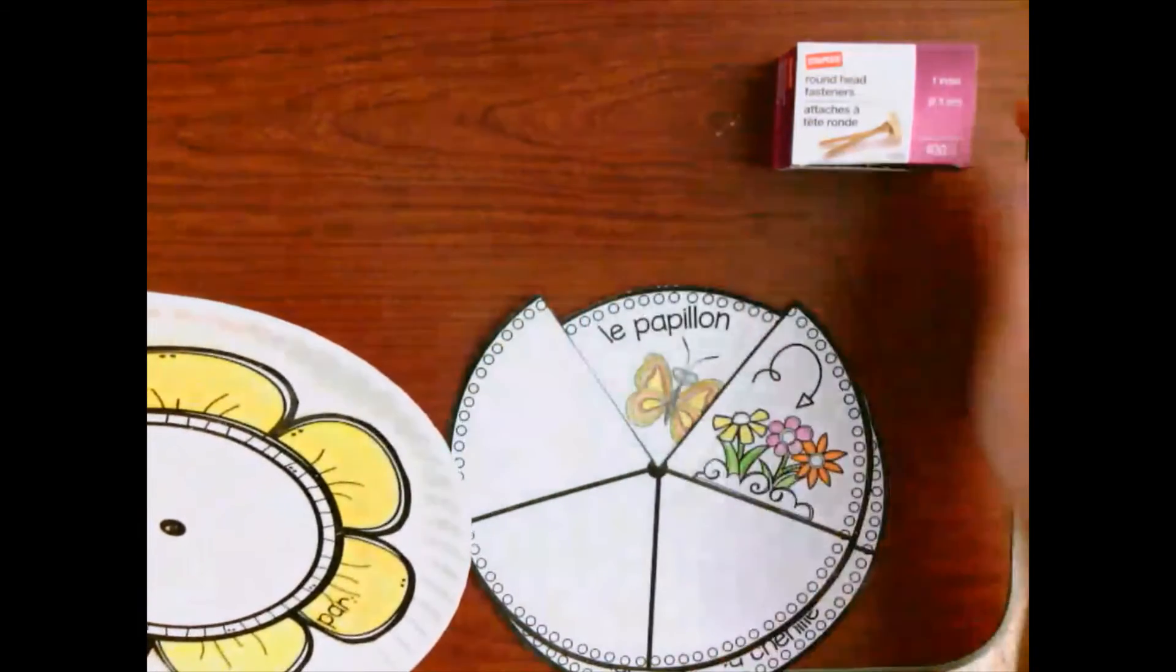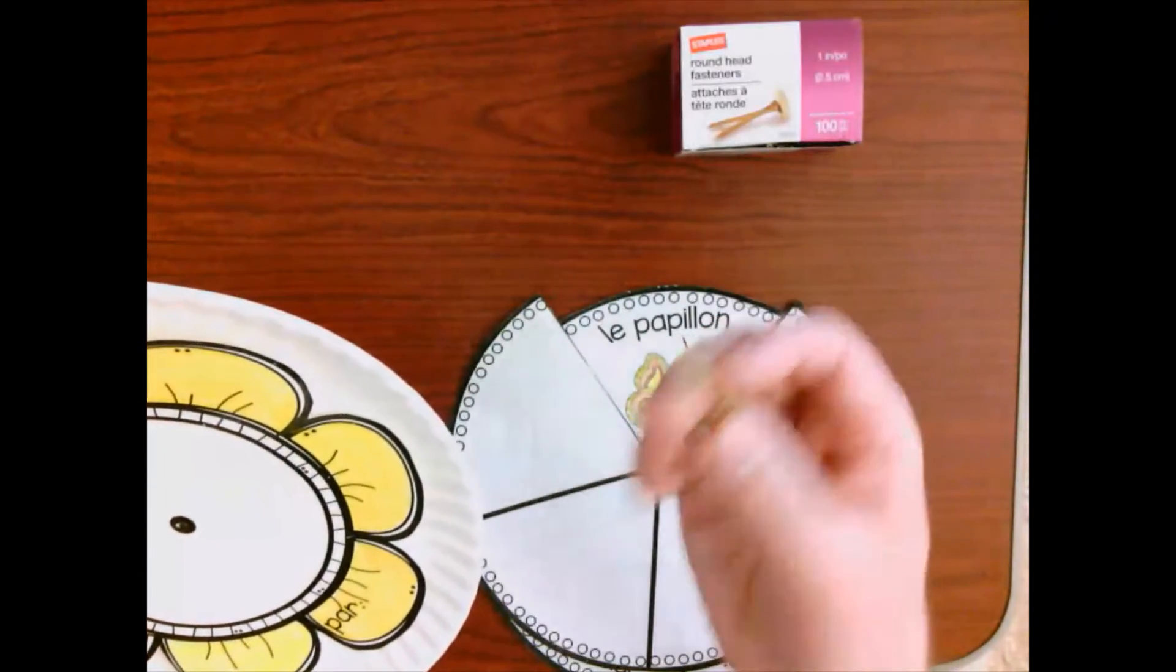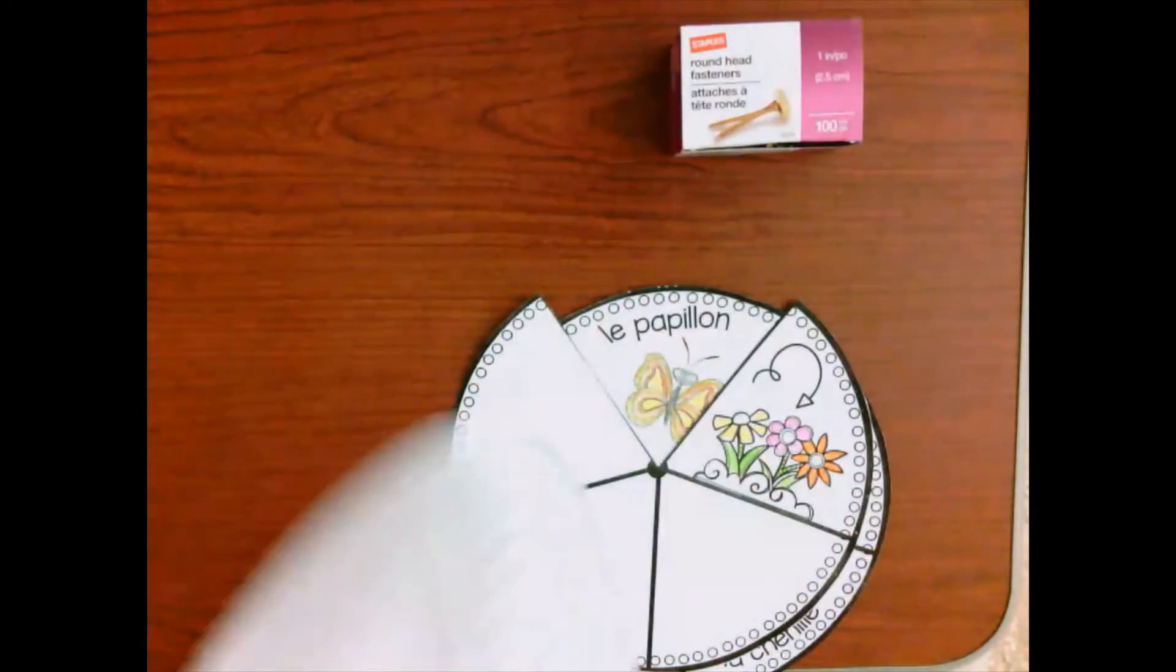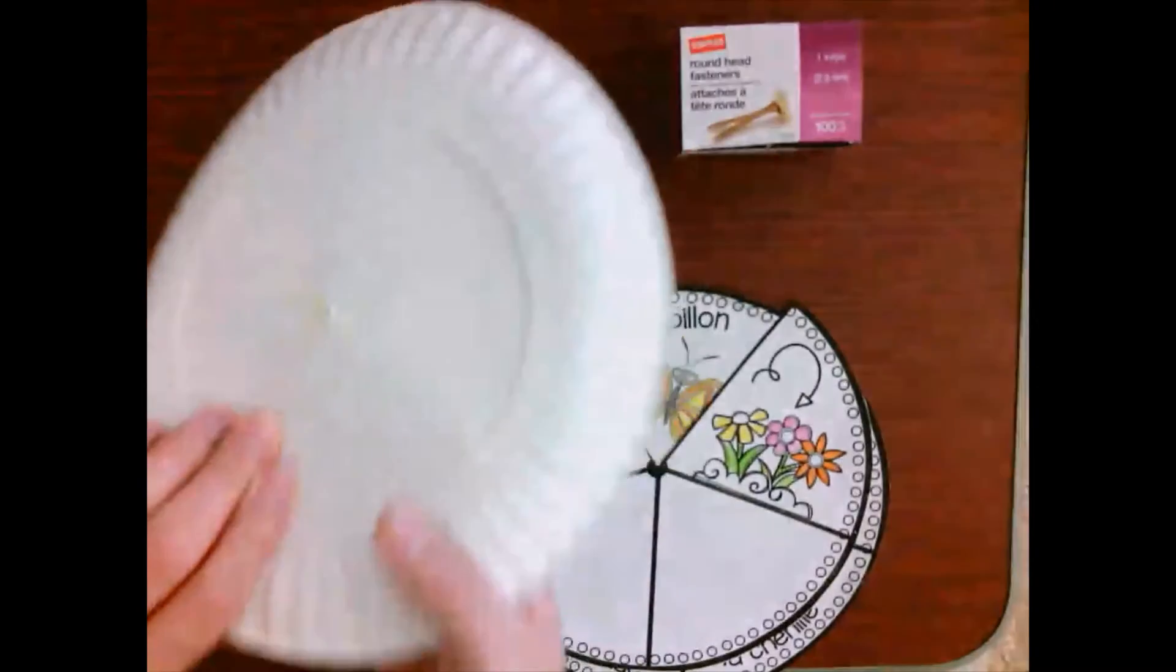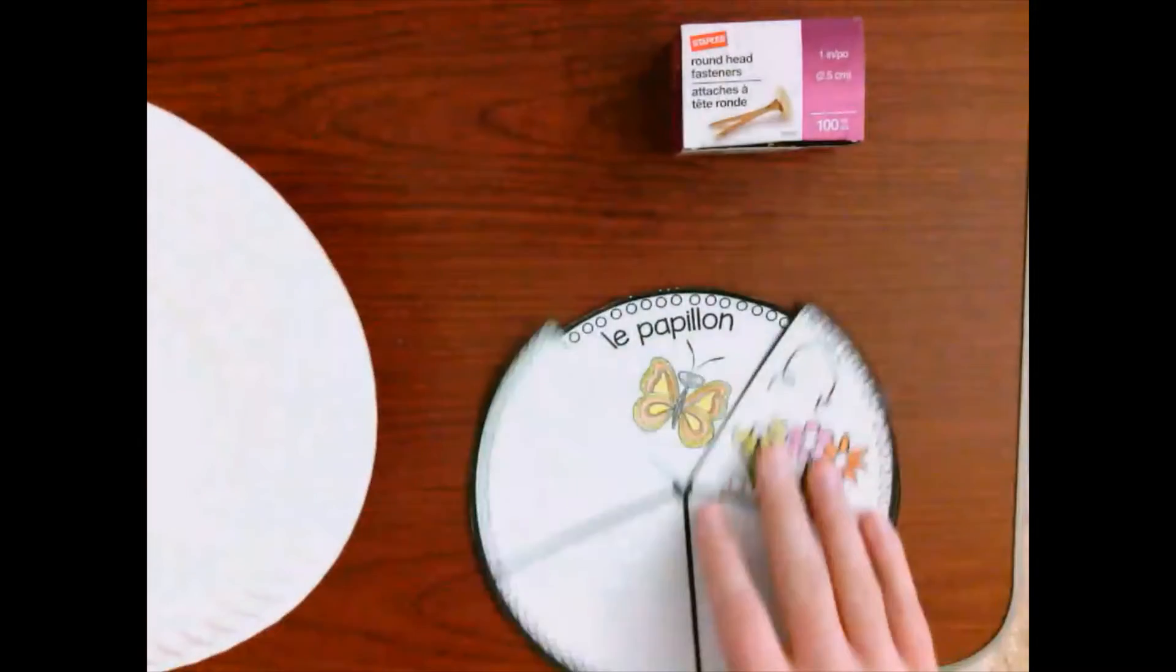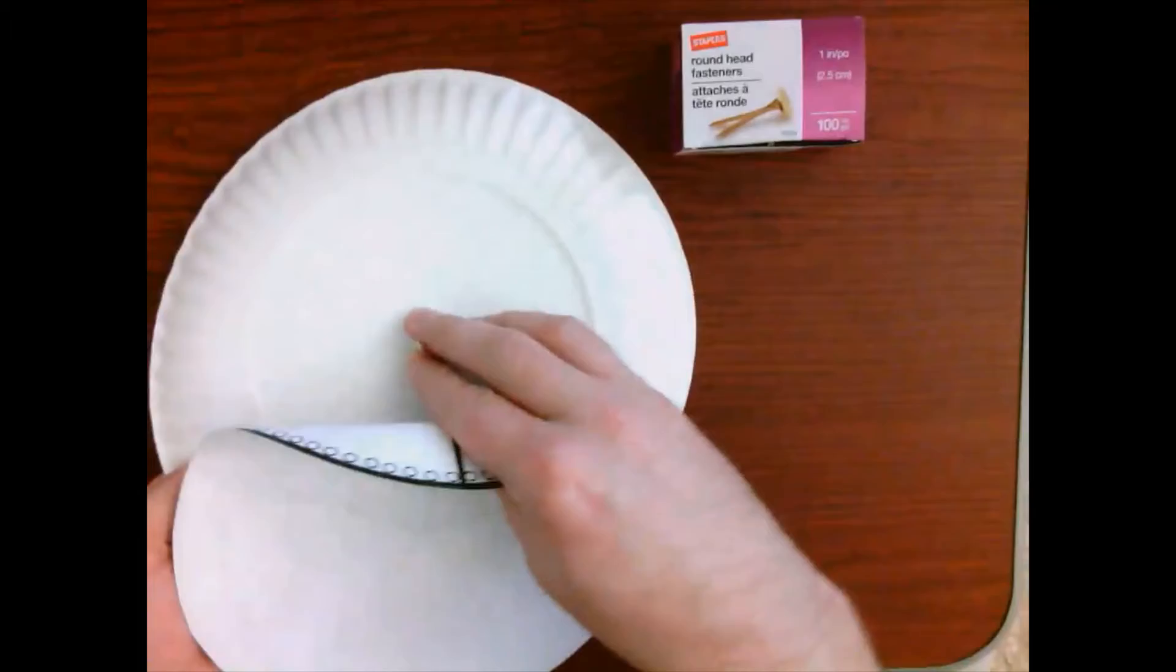Now, you need one of these round-headed fasteners, so you come like this, stick it through like that, to the other side, poking through, then line up your other two pieces and poke those through as well.